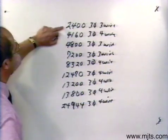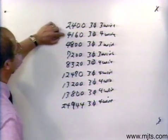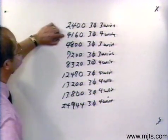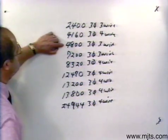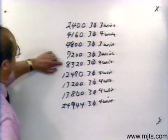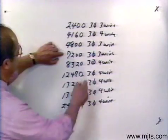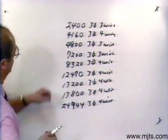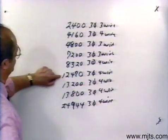Say for example, 2400. If I reconnect those, you see Y instead of delta, I would have a 4160 system. And you see that if I had 4800, that I reconnect that, I would have 8320. My 7200, if I would reconnect that from delta, which we've got here, to a Y. You would see that we would have 12470.